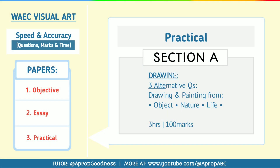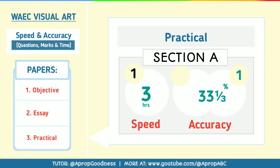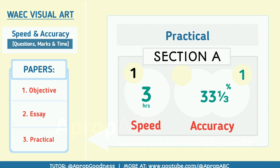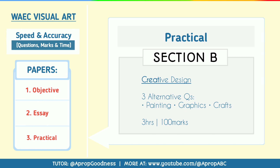Now let's talk about drawing and creative design. For paper 3, we have section A and section B. For section A, which is drawing, you will be given three alternative questions: drawing and painting from object (number one), drawing and painting from nature (number two), and drawing and painting from life (number three). This one question covers three hours, and if you are accurate it amounts to 33.33%. You'll be required to use pencil, charcoal, pen and ink, and so on. That's 100 marks but is 33.33% of your total grade.